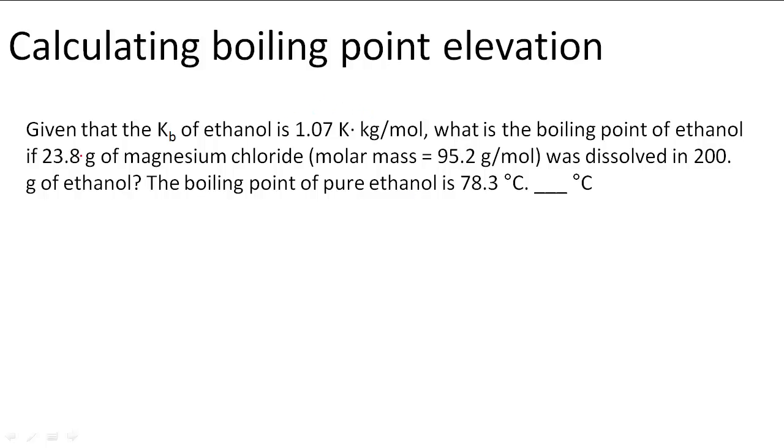Calculating boiling point elevation. In this problem, given that Kb of ethanol is 1.07 K·kg/mol, what is the boiling point of ethanol if 23.8 grams of magnesium chloride was dissolved in 200 grams of ethanol? The boiling point of pure ethanol is 78.3°C.